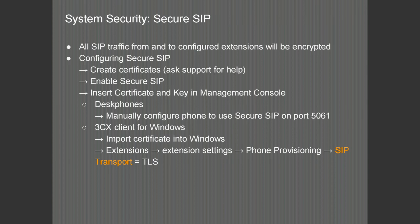Securing the communications between the extensions and the PBX will be done using Secure SIP. You will need to create certificates for TLS and can ask technical support for assistance. You will then enable Secure SIP in the PBX, insert the certificate and key into the management console by copy-pasting the string, and configure your desk phones manually — they will communicate using Secure SIP on port 5061. If you are using a 3CX client for Windows, you will need to import the certificate into Windows, then go to the extensions page, select your extension, go to the phone provisioning tab, and under the 3CX client configuration choose SIP transport as TLS.